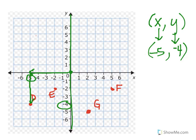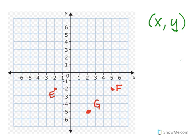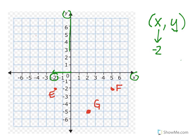Let's go ahead and locate point E. From my point of origin, I'm going to move negative one, negative two. Here's my x-axis, so it's negative two. And to get to point E, when it comes to my y-axis, I'm also going to have to move down. If I'm moving down, it's a negative — negative one, negative two. So both x and y are negative two.